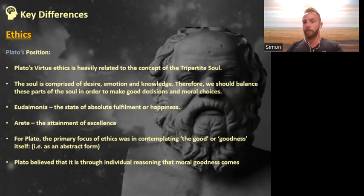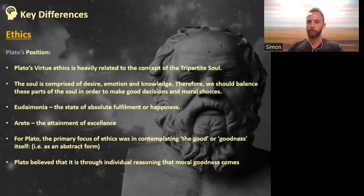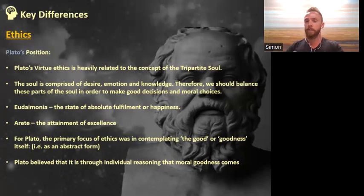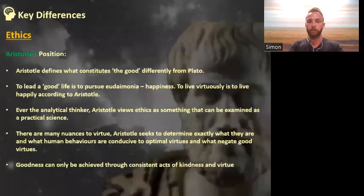The concepts of eudaimonia and arete are both relevant to the ethics of Plato and Aristotle. Eudaimonia refers to a state of complete fulfillment or happiness, and arete refers to any kind of excellence one pursues in order to attain eudaimonia — the final state. For Plato, the primary focus of ethics was the good in general, or goodness itself — thinking of goodness in terms of one of his ideal conceptual forms.